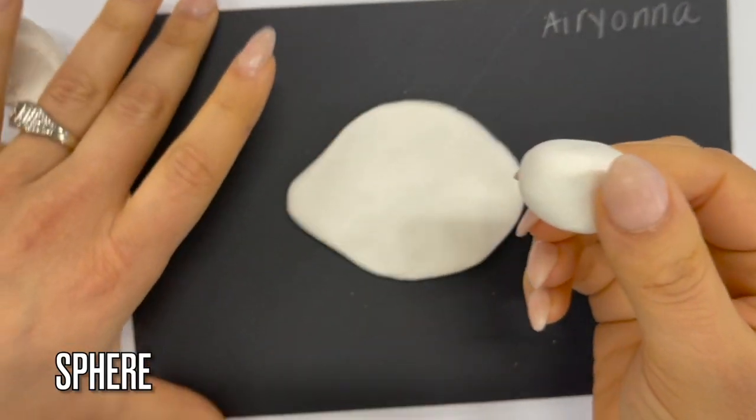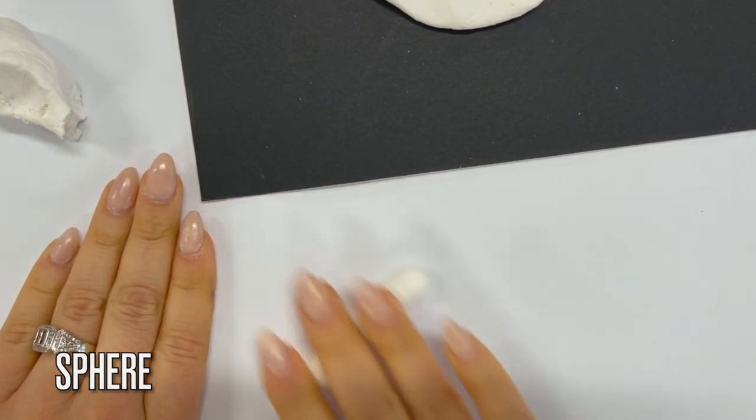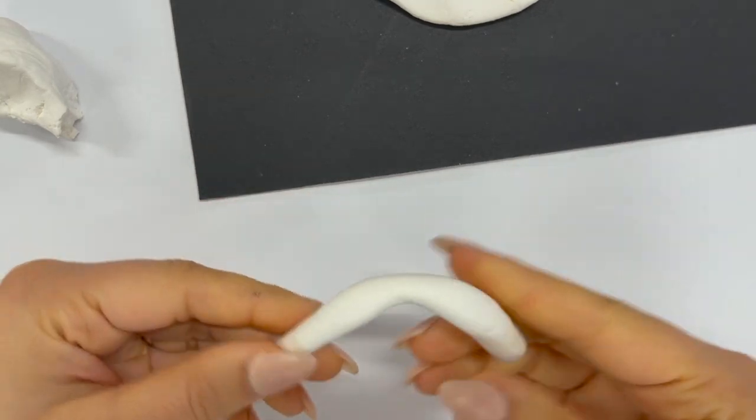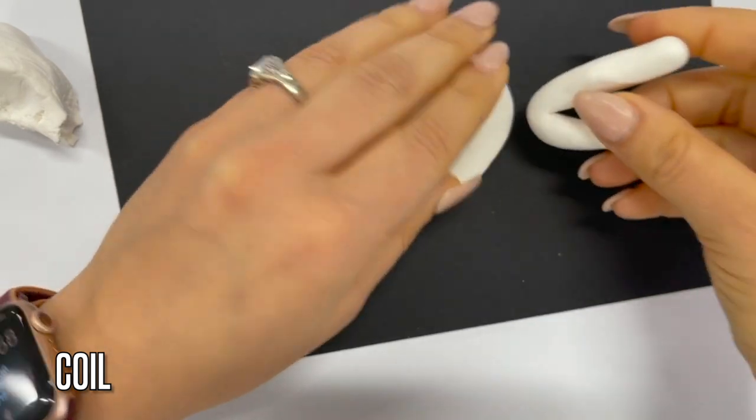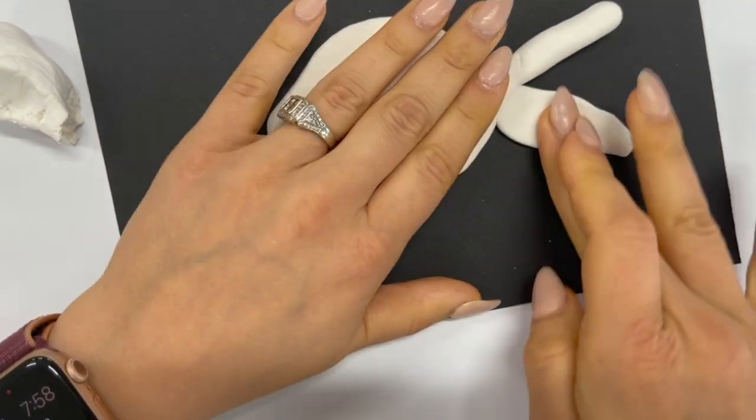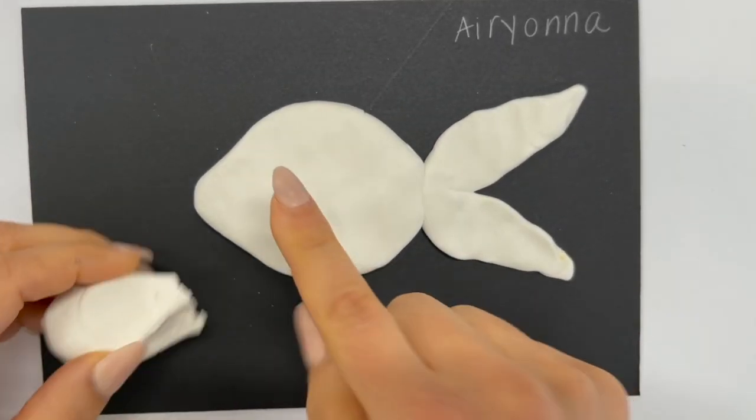Then to get it to be in the shape that I want it, I'm going to roll it out on the table and create what is called a coil or a long snake-like piece of clay. Then I'm just going to manipulate it with my fingers a little bit and get it just the way I want it for my fishtail.